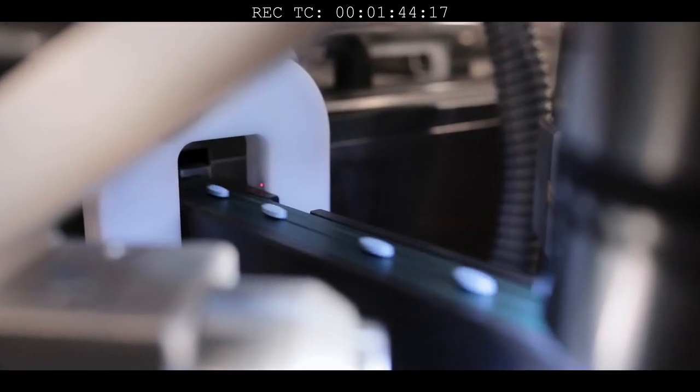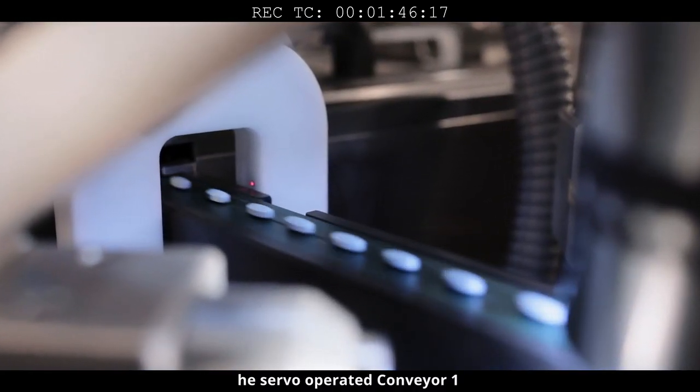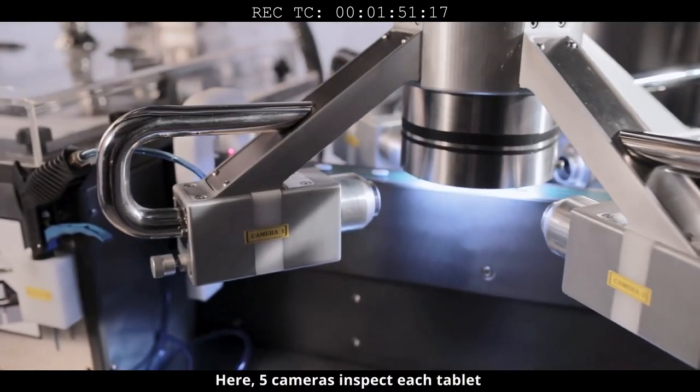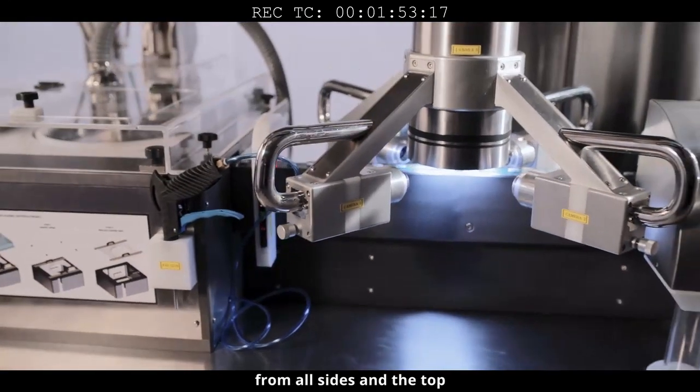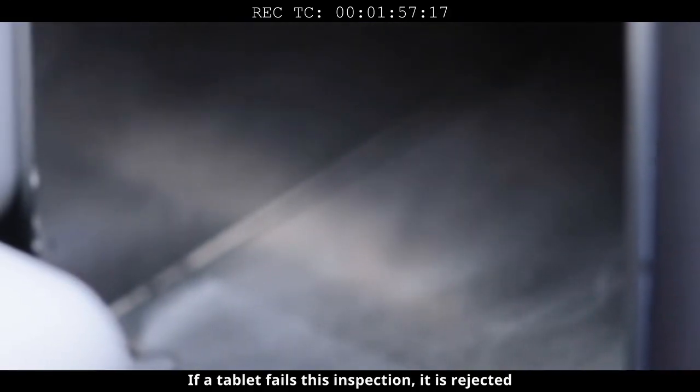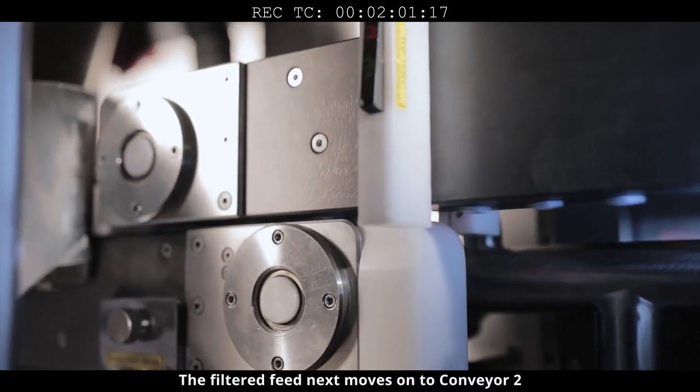The servo-operated conveyor one carries the feed to the inspection zone. Here, five cameras inspect each tablet from all sides at the top. If a tablet fails this inspection, it is rejected.